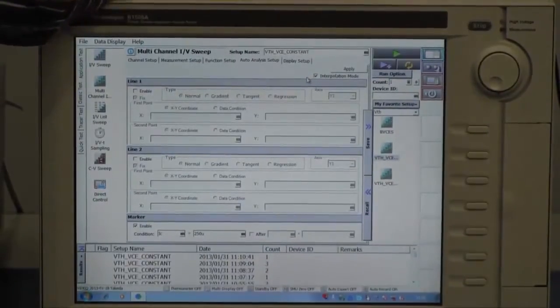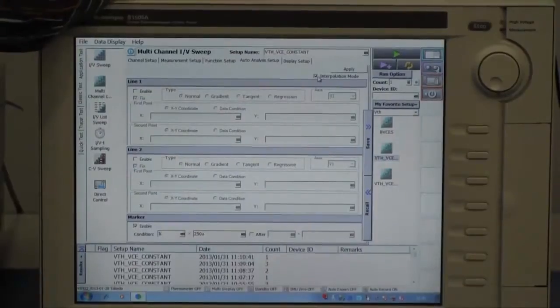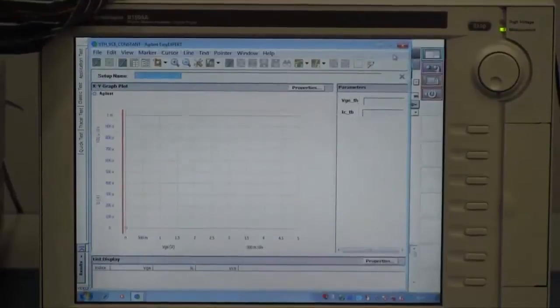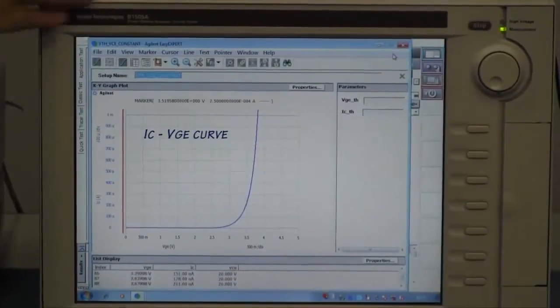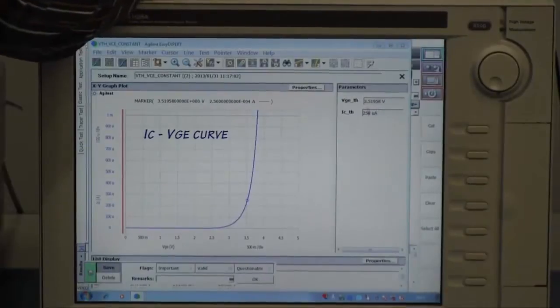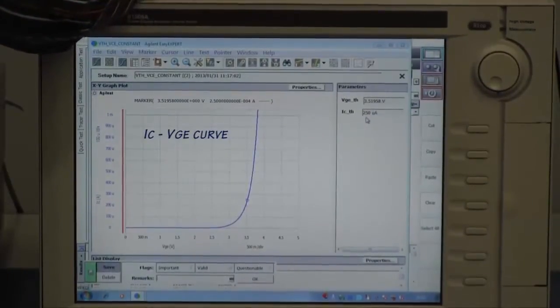Number of samples is limited. I put the intercollection button. Let's start the measurement. Now I can get the threshold voltage 3.5V at 250 μA.